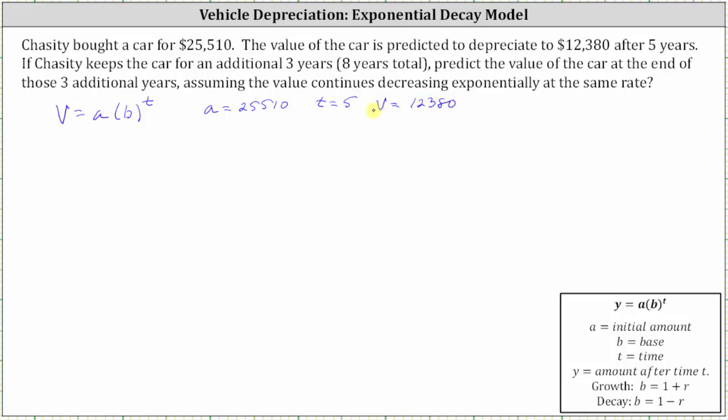From here we'll sub these values into the equation and then find the base b. Once we find the base b, we can determine the value after eight years. So subbing in the values for a, t, and v, we have the equation 12,380 equals 25,510 times the unknown base b raised to the power of five. And now we need to solve for b. The first step is to divide both sides by 25,510.